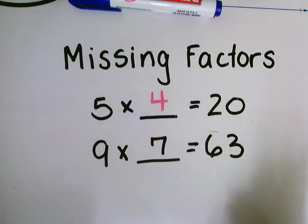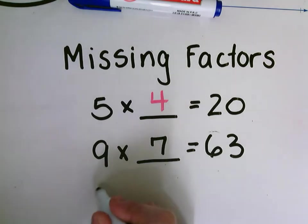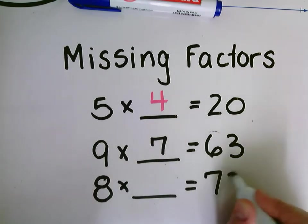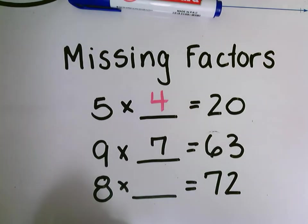Let's say I had another problem: eight times blank equals 72. And let's say I can't remember. I'm not sure what times eight is going to give me 72 as a product.